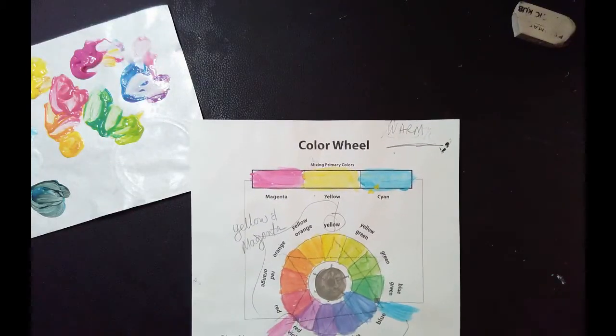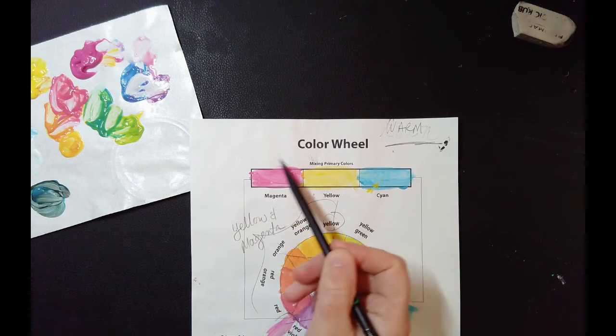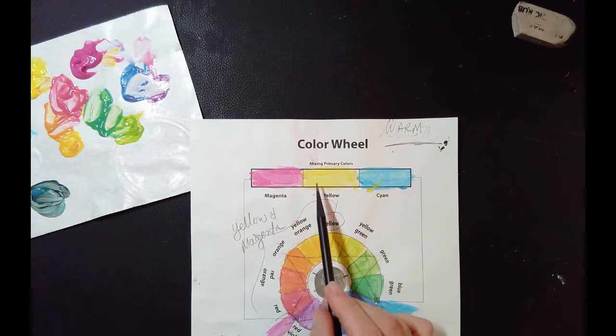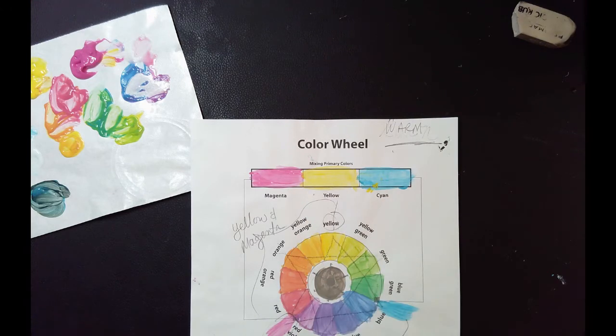Okay, so as a reminder now, to make neutral, to make mud, you're just mixing these three together. And there's so many different ways to approach that. You can literally mix yellow, cyan, and magenta all together and you get what you get. And that can be one neutral.